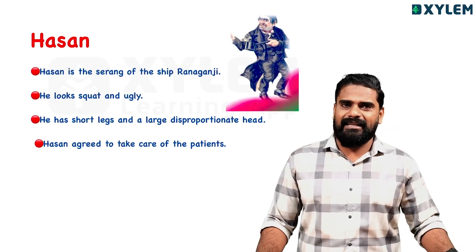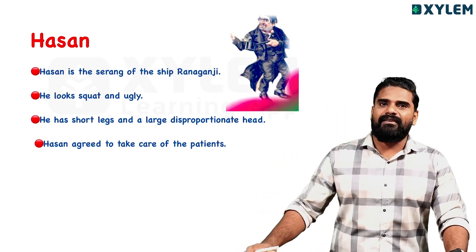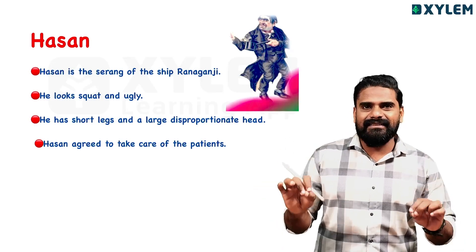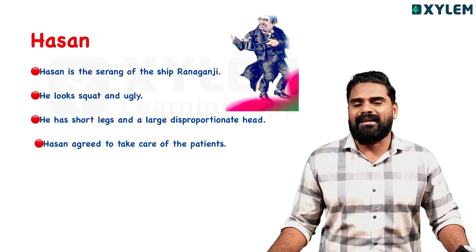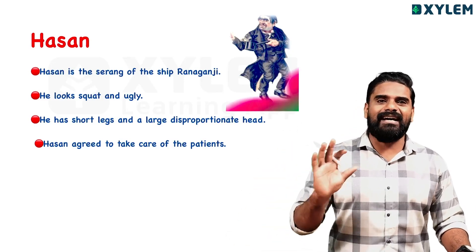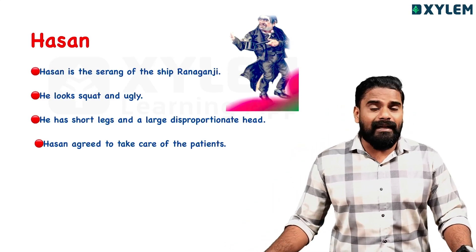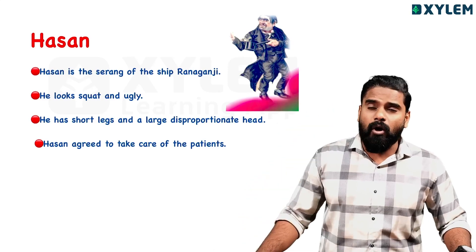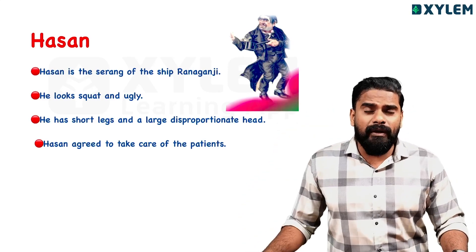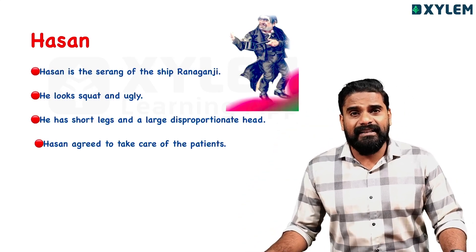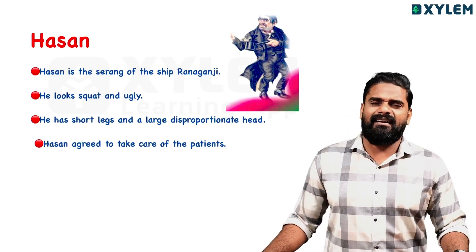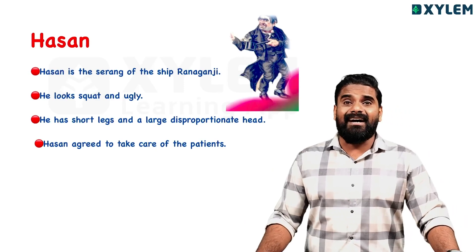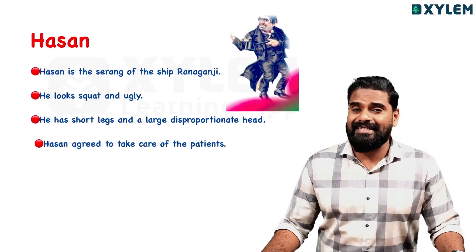Hussein is the sarang of the ship Rana Kanji. He looks squat and ugly — that is his physical appearance. He has short legs and a large, disproportionate head.